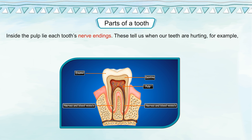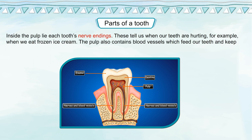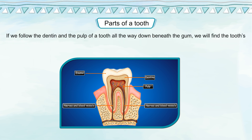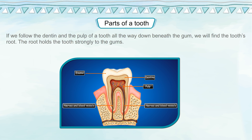Inside the pulp lie each tooth's nerve endings. These tell us when our teeth are hurting, for example when we eat frozen ice cream. The pulp also contains blood vessels which feed our teeth and keep them alive. If we follow the dentin and pulp of our tooth all the way down beneath the gum, we will find the tooth root, which holds the tooth strongly to the gums.